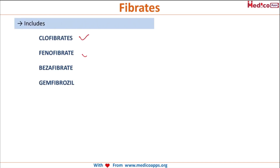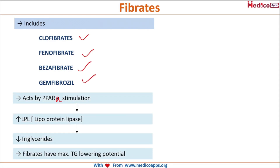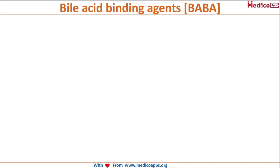The next class is fibrates, which include clofibrate, fenofibrate, bezafibrate, and gemfibrozil. They act by PPAR-alpha stimulation and increase lipoprotein lipase, thereby reducing triglyceride levels. Fibrates have the maximum lowering potential for triglycerides — always remember: fibrates and triglycerides go together.